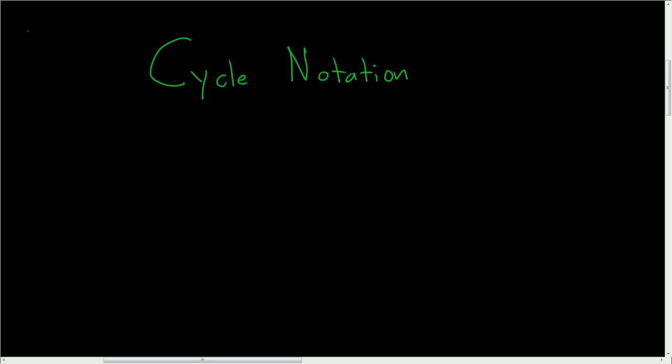In this video we're quickly going to talk about cycle notation. So let's say we have a permutation written in array or two-line notation.